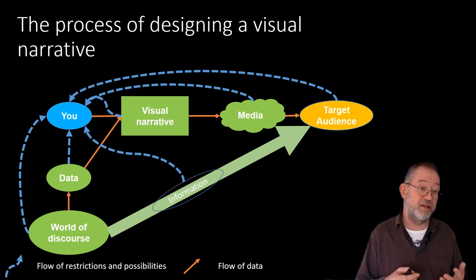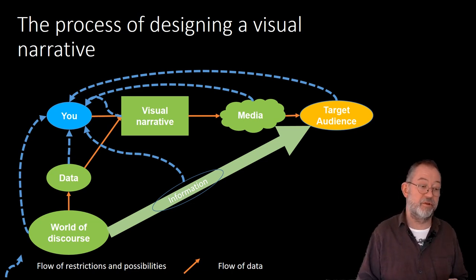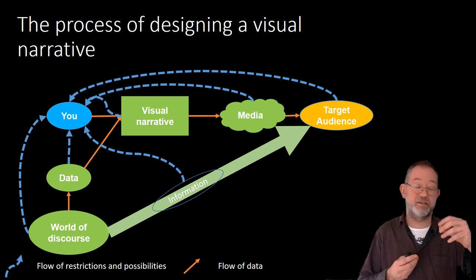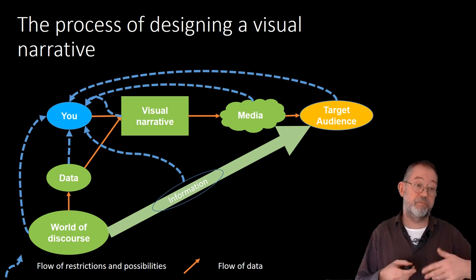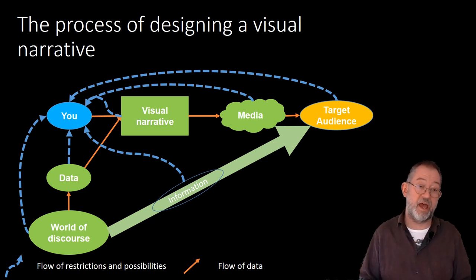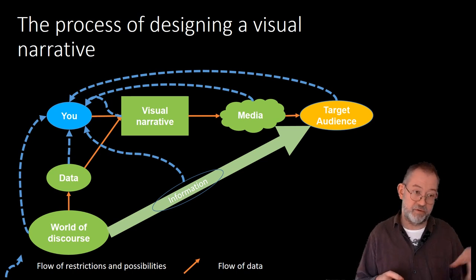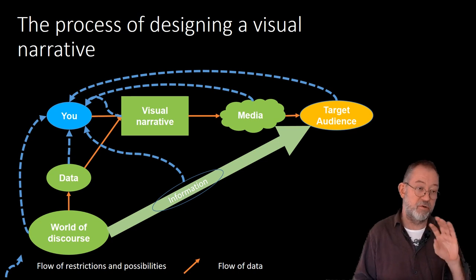Finally, all of these things get connected. The flow of information is from the world of discourse. We extract the data, we present it as a narrative, and send it to the media and to the target audience. That's the flow of the process. But you have to think about all the different components. Let's take the components one by one and talk a bit more about them.